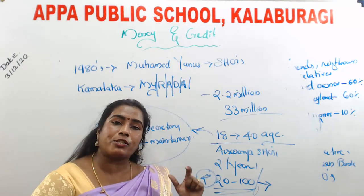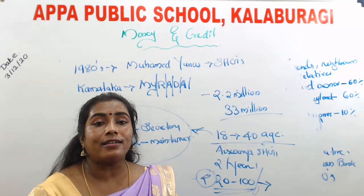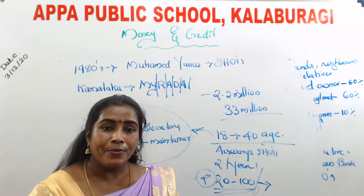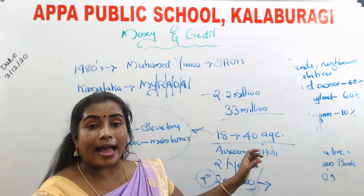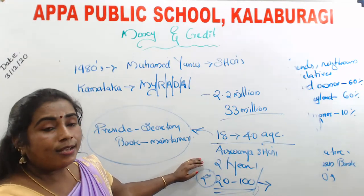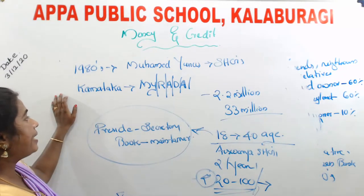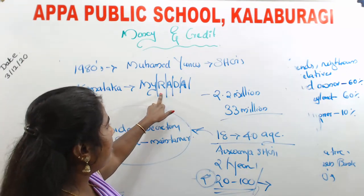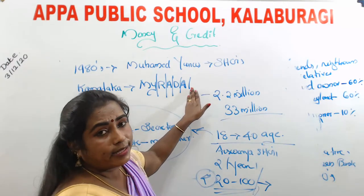Higher cost of borrowing sometimes pushes people into a debt trap. Most of the time they face difficult situations and commit suicide. For protecting poor people from the domination of moneylenders and unfair means, the government of India along with certain NGOs started the SHG concept. In India, the first SHG was started in Karnataka, named MYRADA — Mysore Resettlement and Development Association. Now almost 2.2 million SHGs are working, consisting of 33 million members.